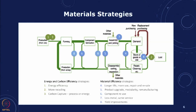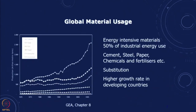If we look at global material use, energy-intensive materials — cement, steel, paper, chemicals, fertilizers — account for about 50 percent of the industrial energy use. Interestingly, most of these materials are now being consumed by developing countries, with much higher growth rates in those countries.